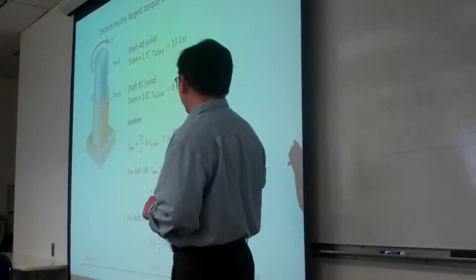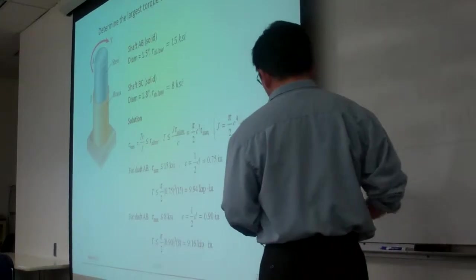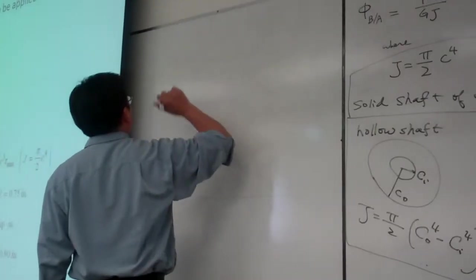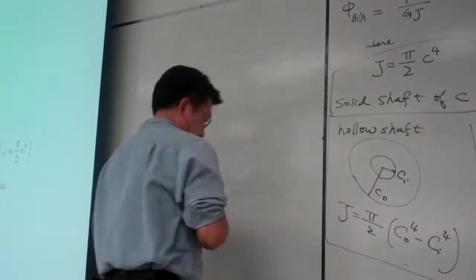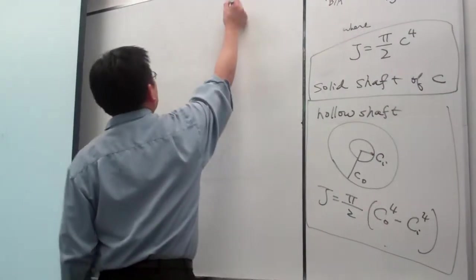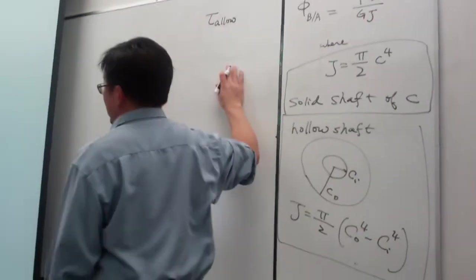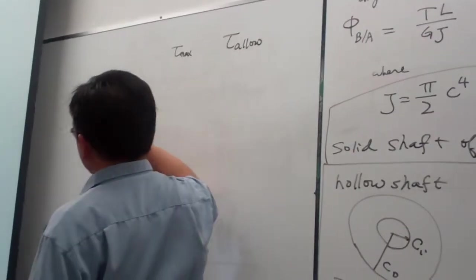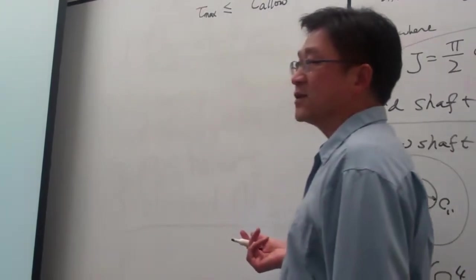Among those students, you display two numbers and one number is the correct answer, but you choose the other one. So here I decided to use this example for demonstrating these things. The concept is this: we are given the allowable stress. The allowable stress means the maximum stress in this structure must be less than or equal to this number. That is the basic concept.